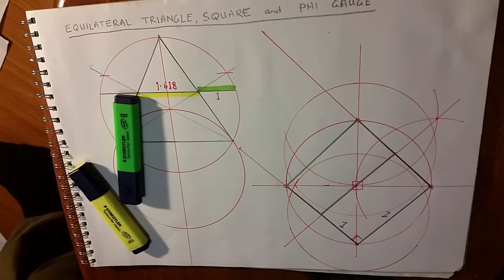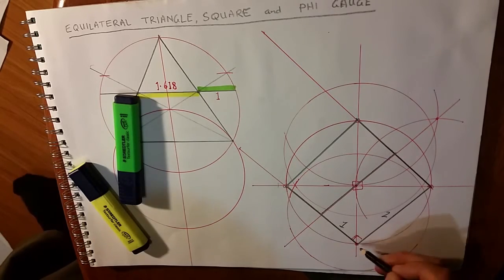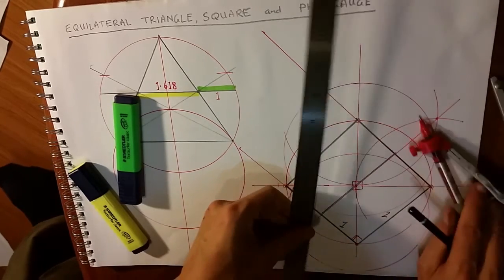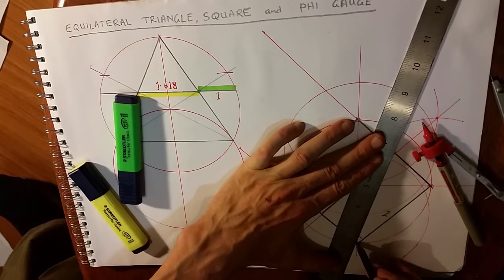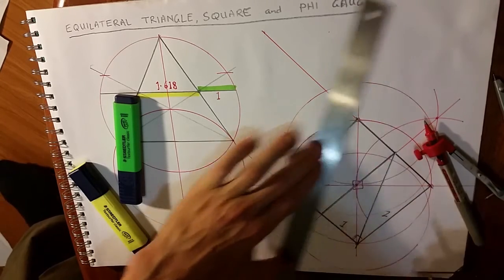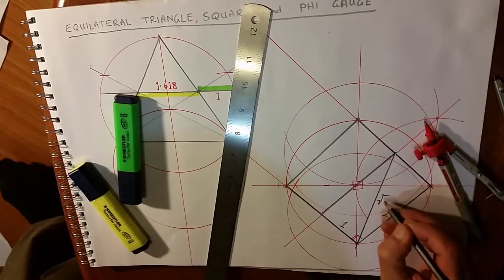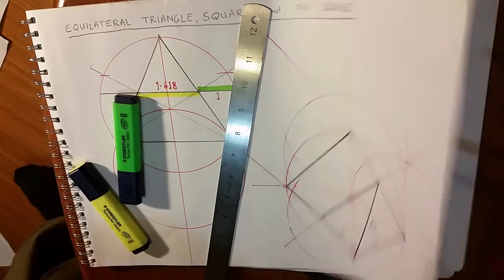Meaning that the diagonal would have to be the square root of five, respective to this being one and this being two.